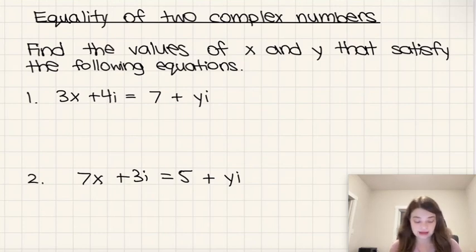In these examples we need to find the values of x and y that satisfy the following equations. So here's the thing: we have a real part and an imaginary part of these equations, and the real part needs to equal the real part on either side, and the imaginary part needs to equal the imaginary part of each side.